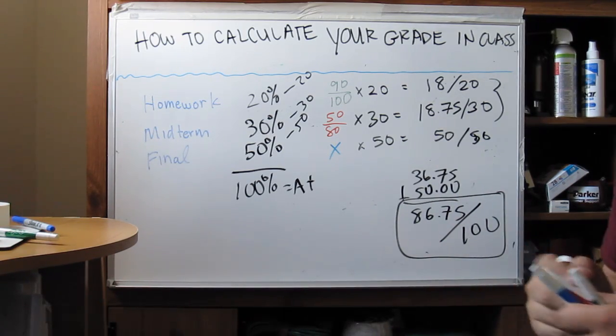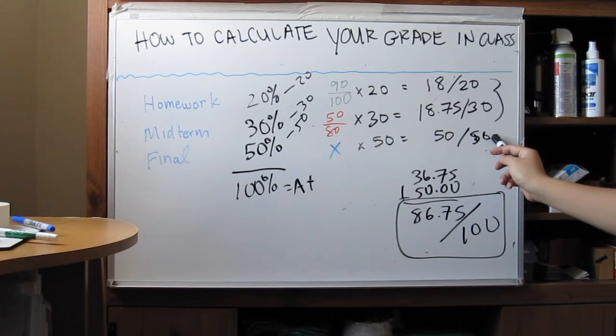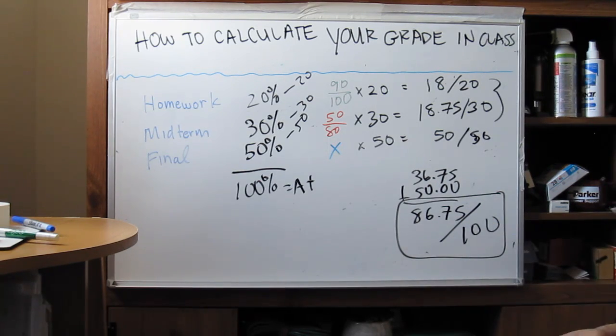Meaning, even if you got a perfect score on your final, you still can't get an A or A- in your class. The highest grade that you can actually get is a B.